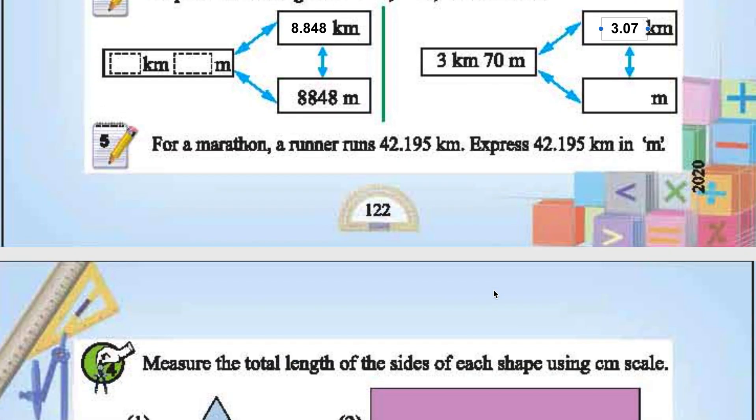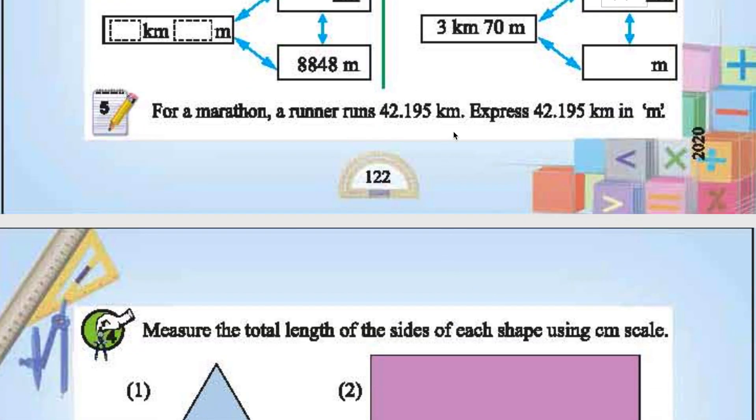For a marathon, a runner runs 42.195 kilometers. Express 42.195 kilometers in meters. 42,195 meters.